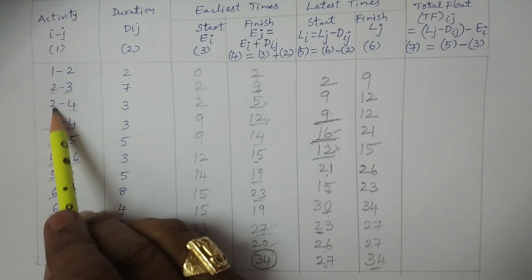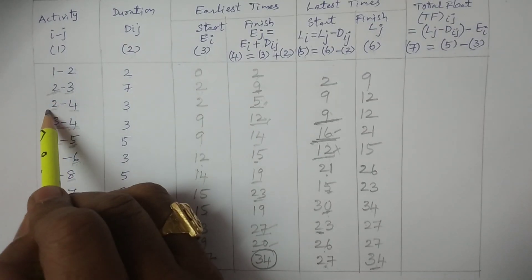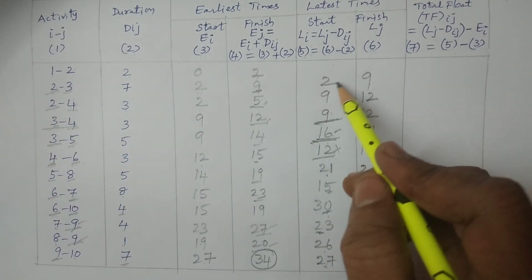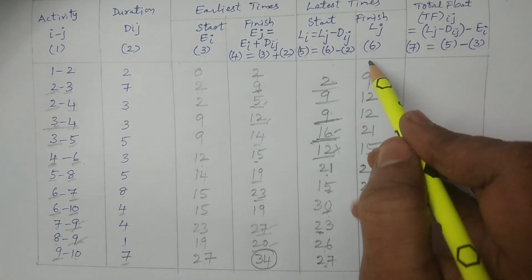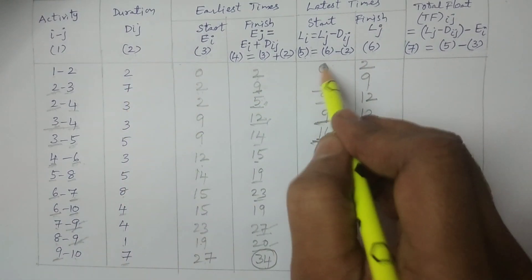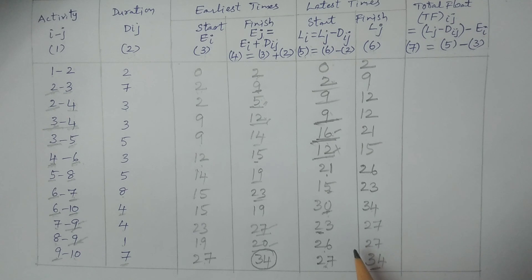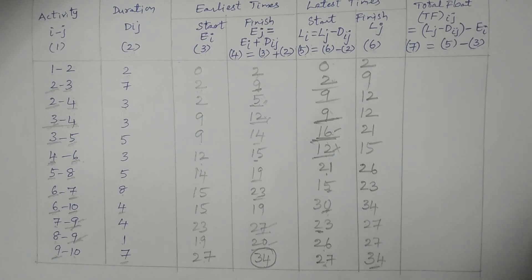For event 2: there are two values — from 2 to 3 giving 2, and from 2 to 4 giving 9. Take the minimum: minimum is 2. 2 minus 2 equals 0. This is the calculation of L values. Calculate Lj first, then Li, using minimum when more than one connection exists.